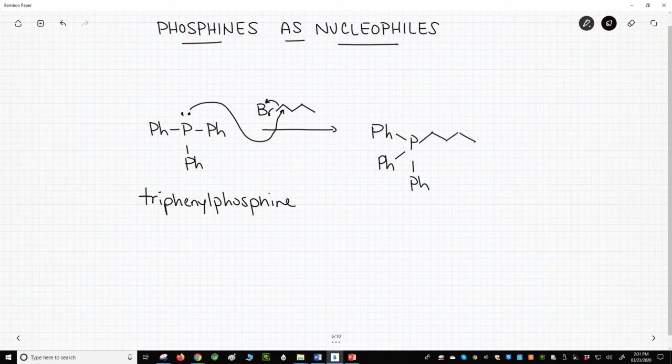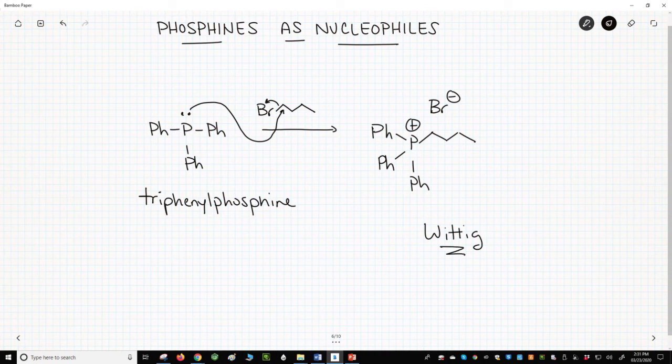is this phosphonium bromide salt. These salts are very useful in a reaction called the Wittig reaction, which is detailed in the next video of this playlist.